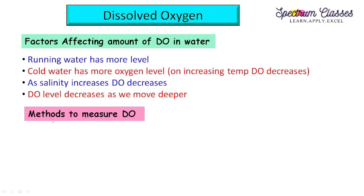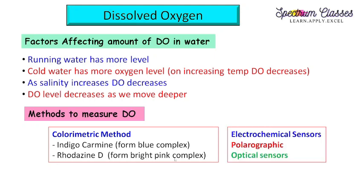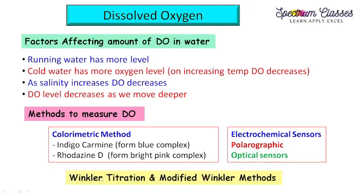Now the next important point: how are we going to measure this dissolved oxygen? It can be measured by various methods. One is the colorimetric method, using two different reagents — indigo carmine, with which dissolved oxygen forms a blue complex, and rhodazine D, with which it forms a bright pink complex. Other methods are electrochemical sensor, polarographic, and optical sensor methods. Apart from these, Winkler titration and modified Winkler titration methods are also available.